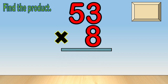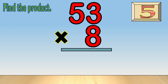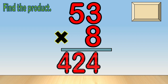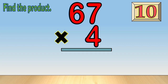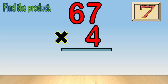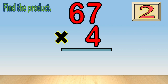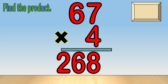Forty-two times seven — times up, the answer is 294. Fifty-three times eight — times up, the answer is 424. Sixty-seven times four — times up, the answer is 268.